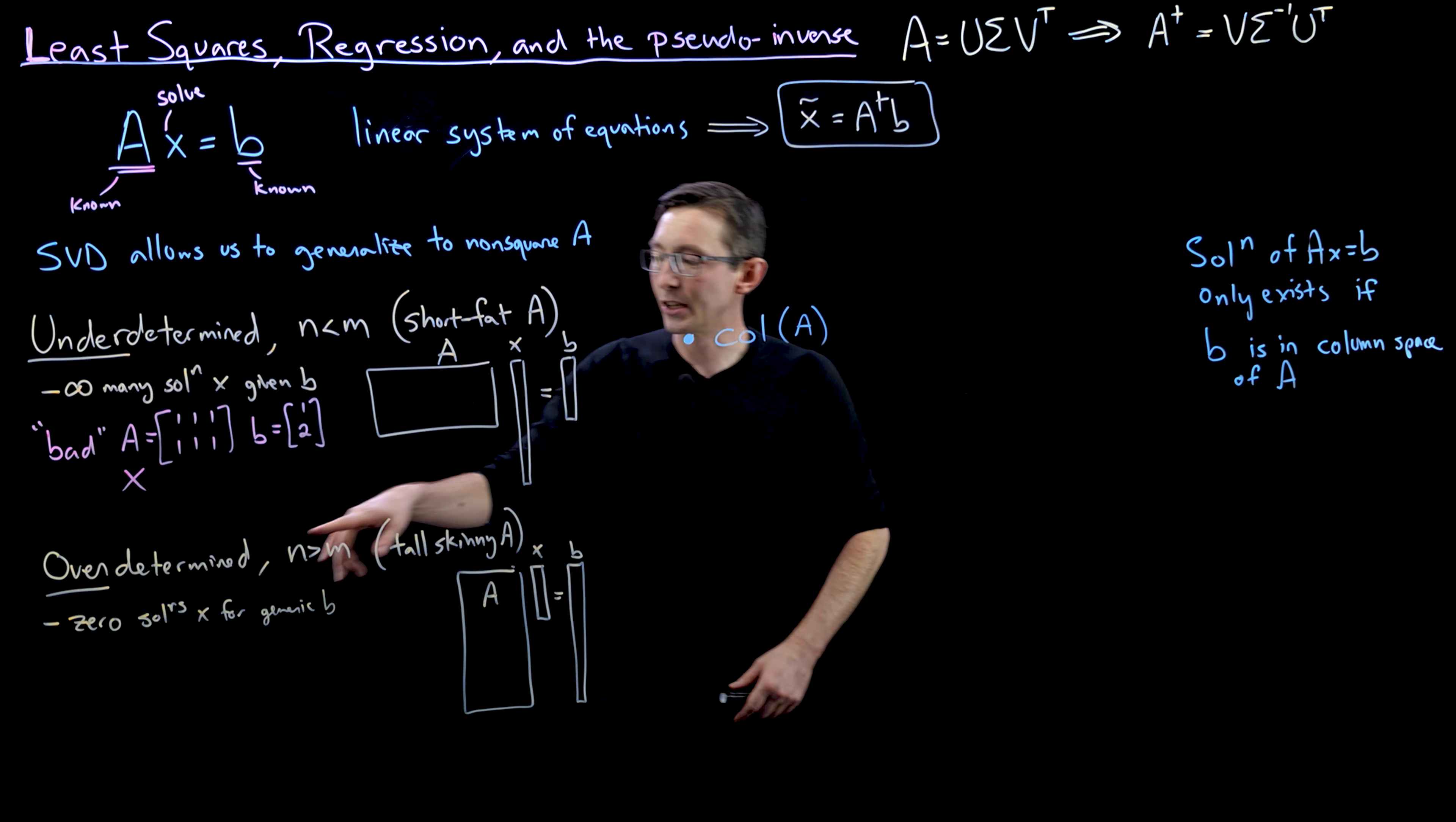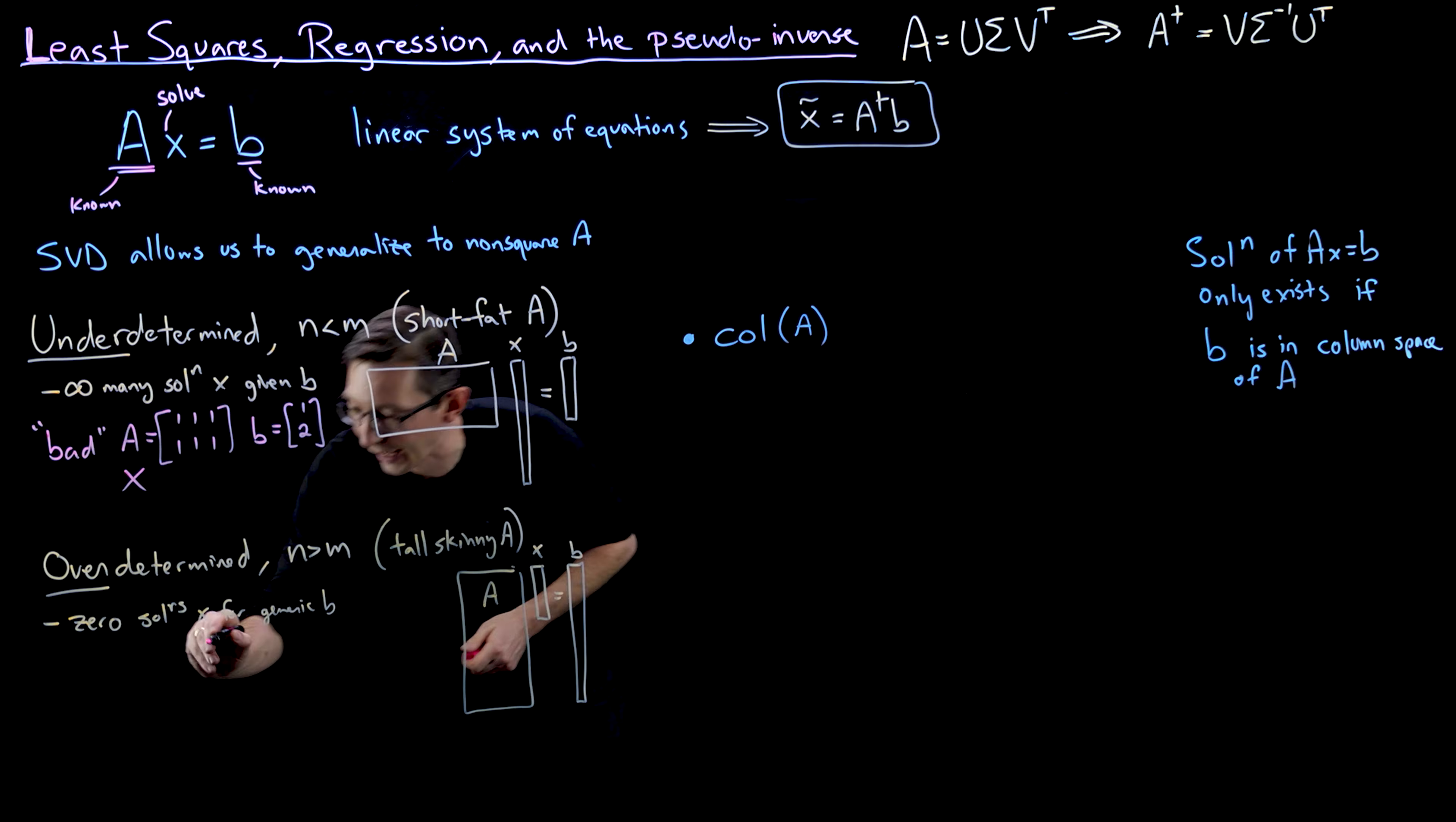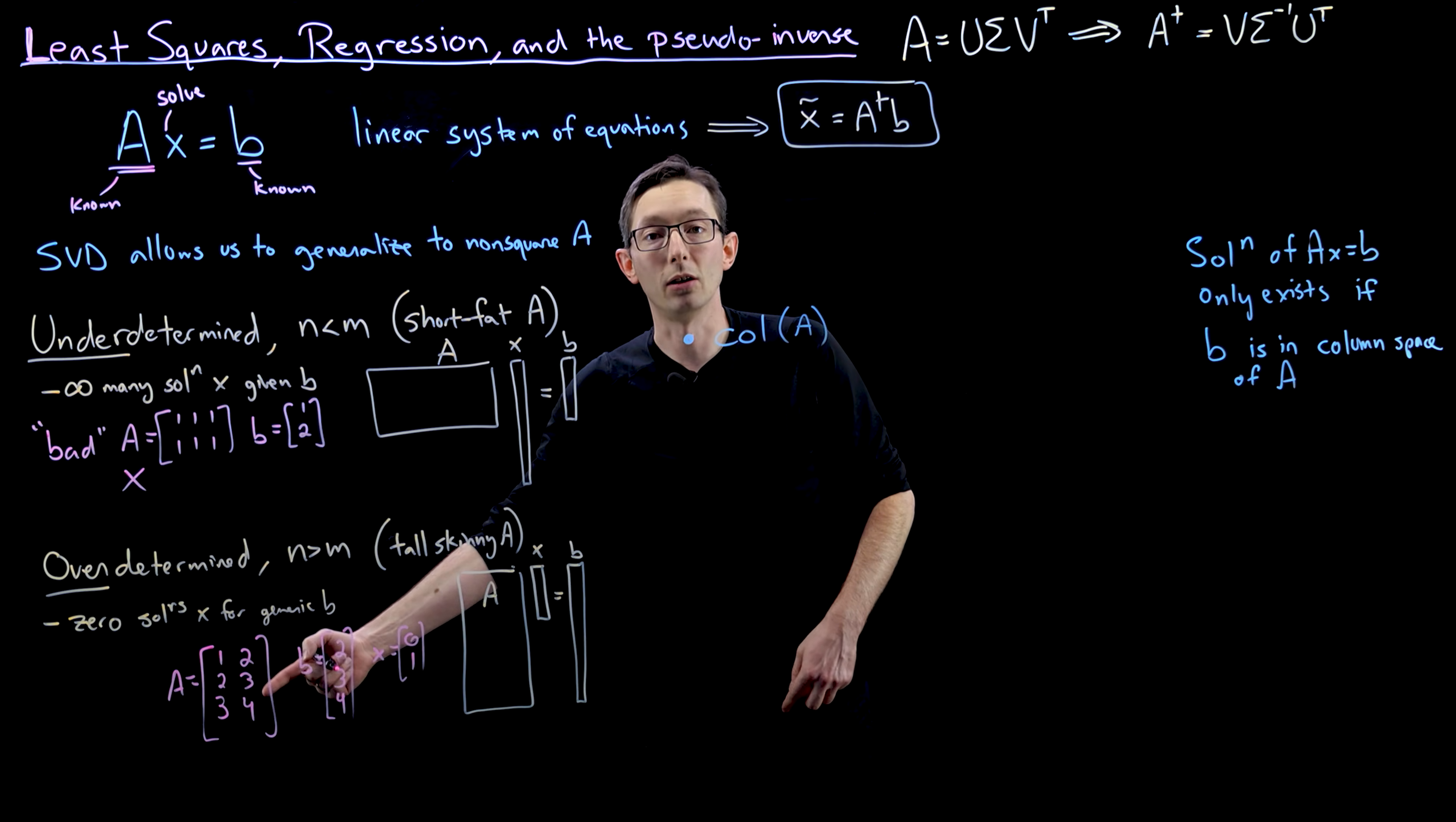Now, even in this case of the overdetermined system where usually I don't expect my B vector to be exactly solved by AX, if B was one of the columns of A, so that it was in the column space of A, then there is a solution to that. So if I had A equals 1, 2, 3, and then let's say 2, 3, 4. And if B is equal to 2, 3, 4, then this is trivially solved with X equals 0, 1. If I take 0, 1 times that A matrix, I get B. Again, because B is in the column space of A.